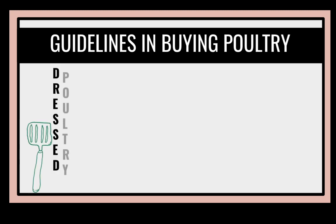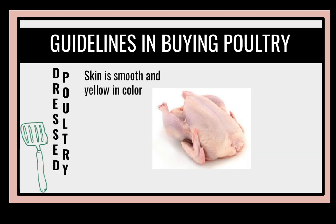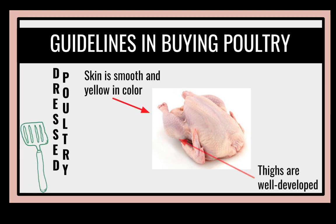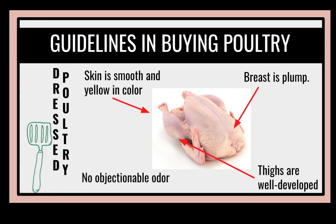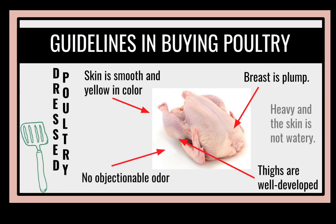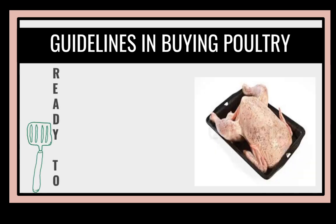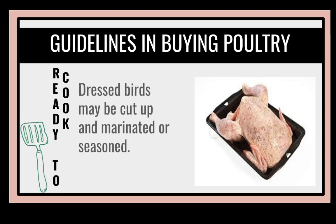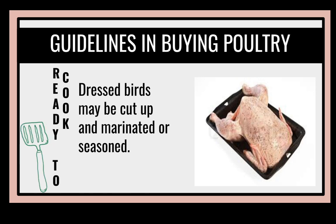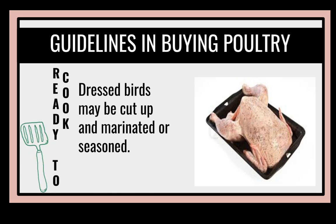For dressed poultry, the skin shall be smooth and yellow in color. The thigh shall be well-developed, breasts plump, and no objectionable odor. The bird is heavy and the skin is not watery. We also have ready-to-cook: dressed birds that may be cut up and marinated or seasoned, like with salt, pepper, or barbecue marinade.